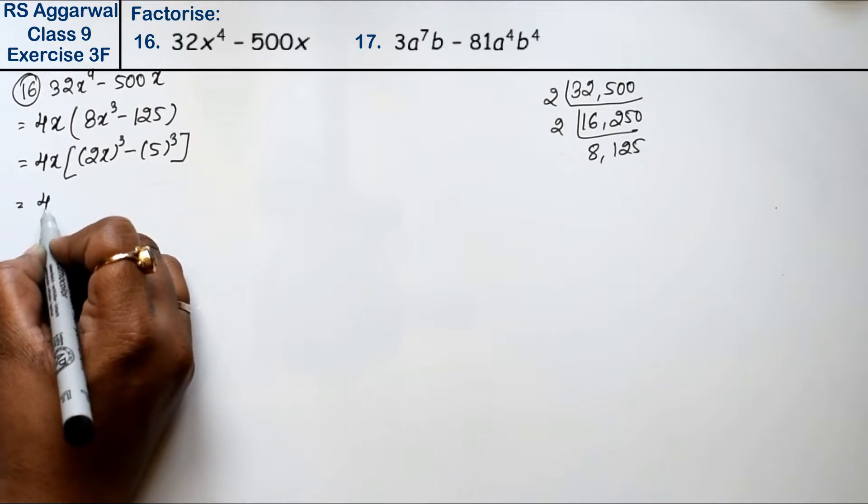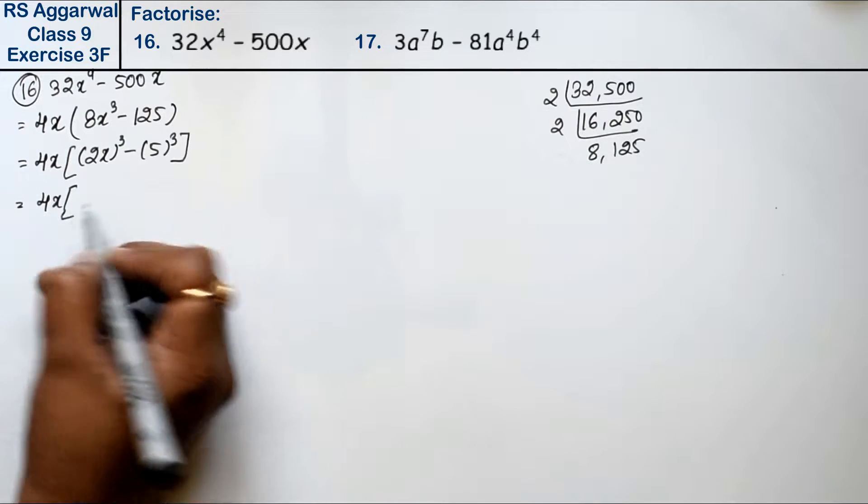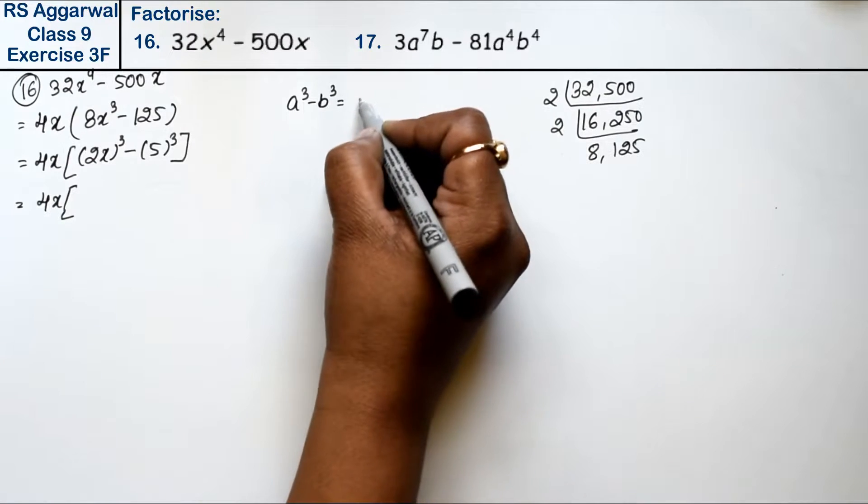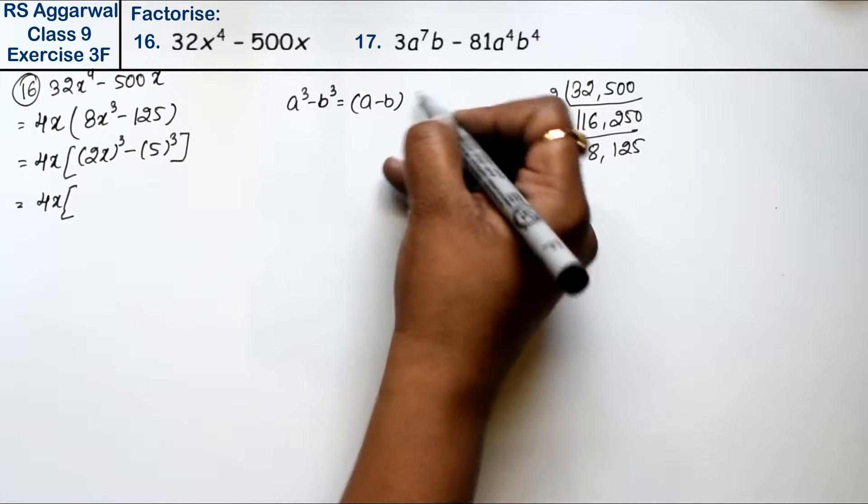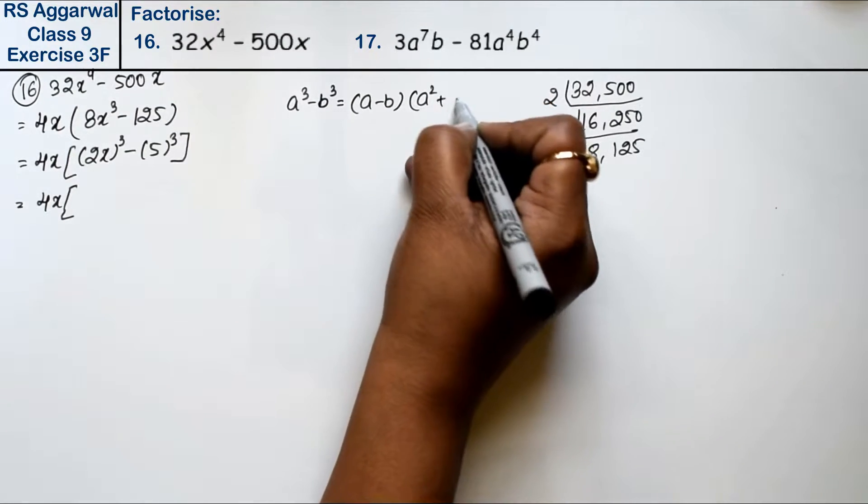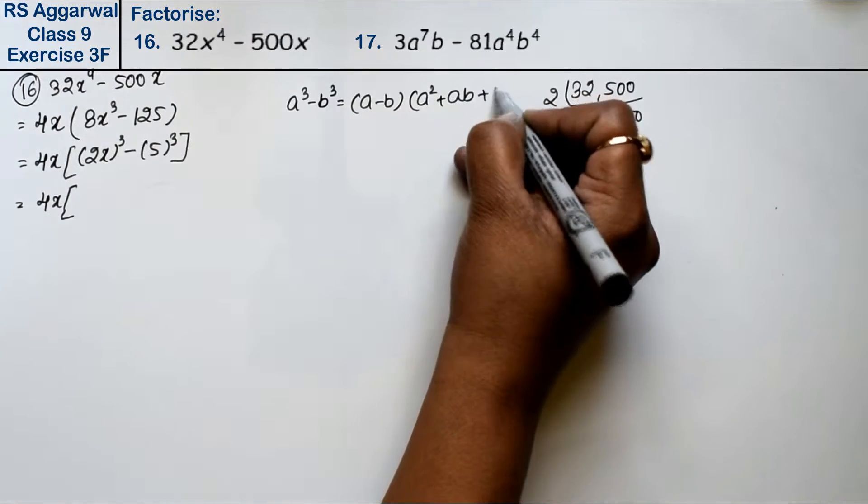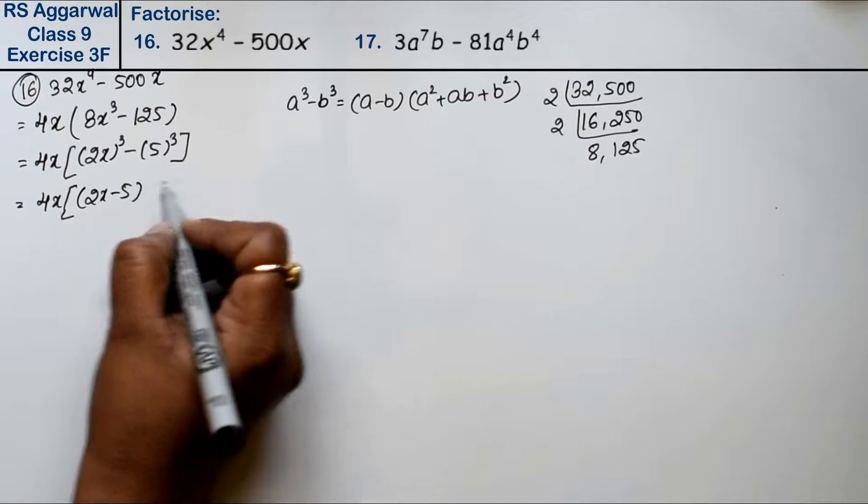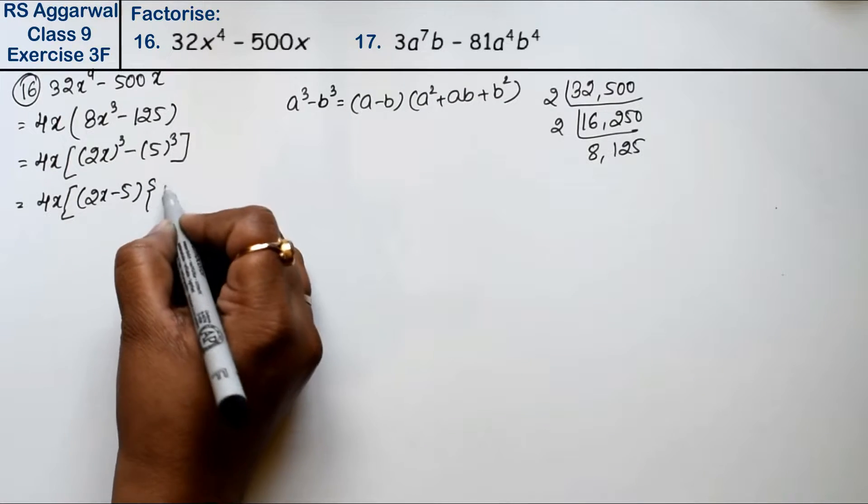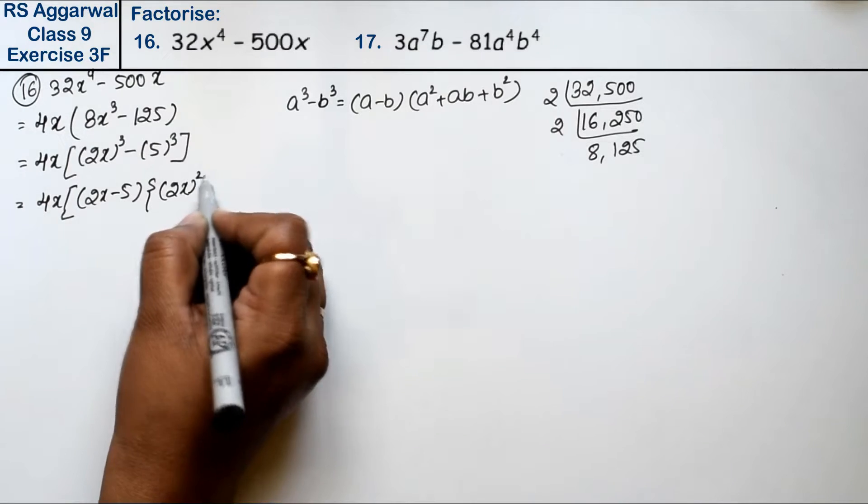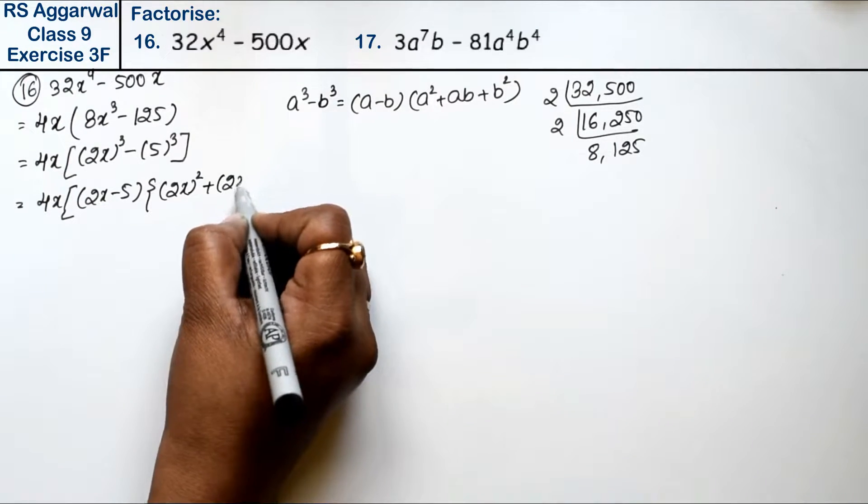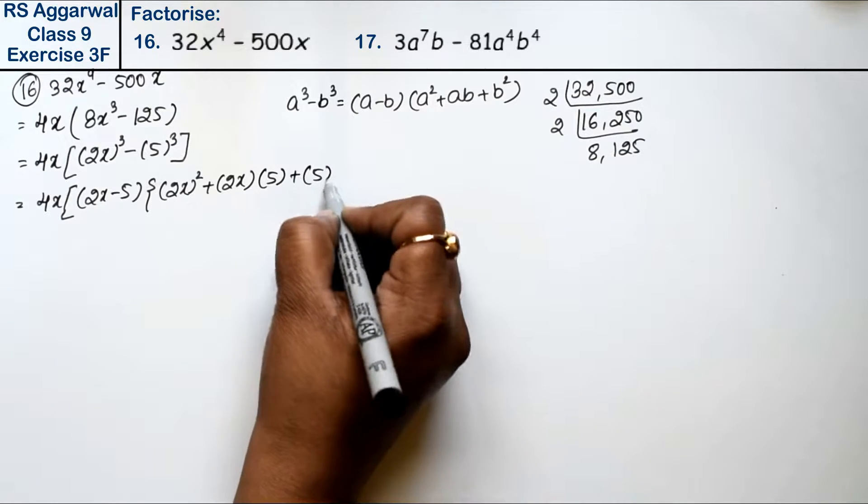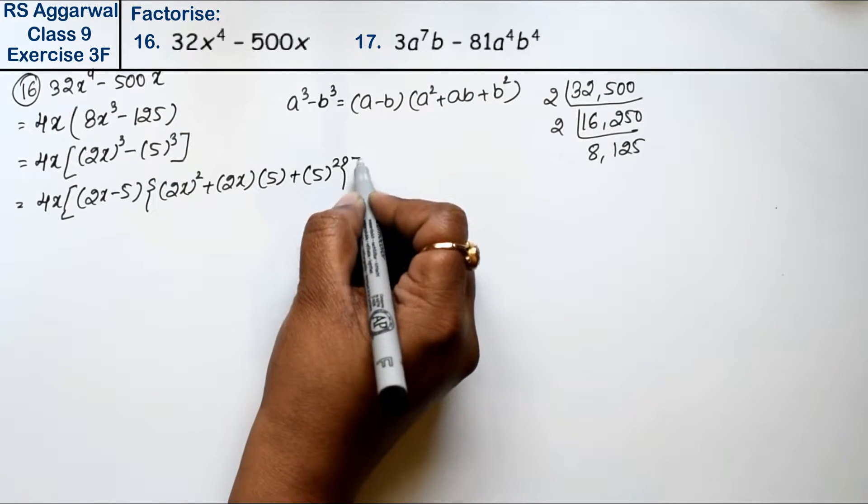Now we can apply the a³ minus b³ formula, which is (a - b)(a² + ab + b²). So a is 2x minus 5, and (2x)² plus 2x times 5 plus 5².